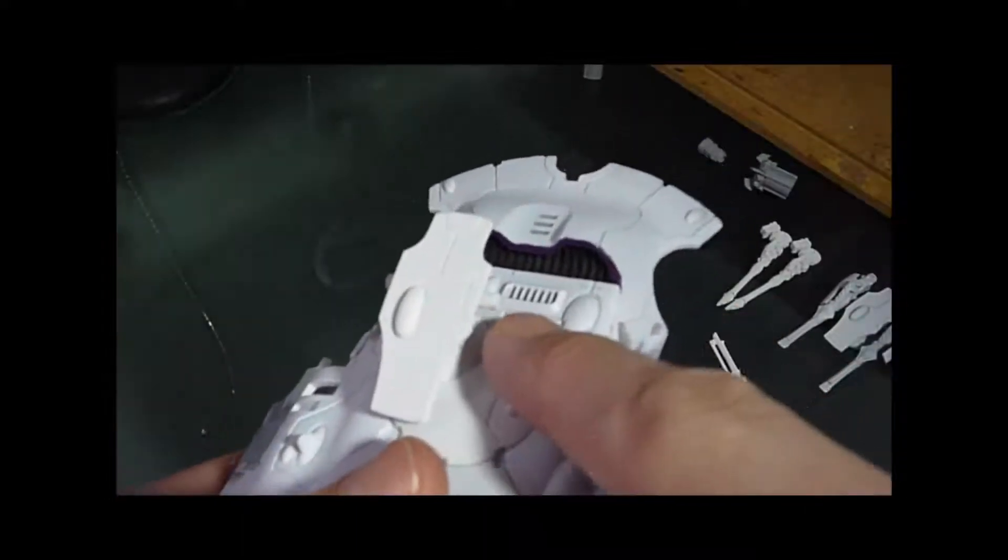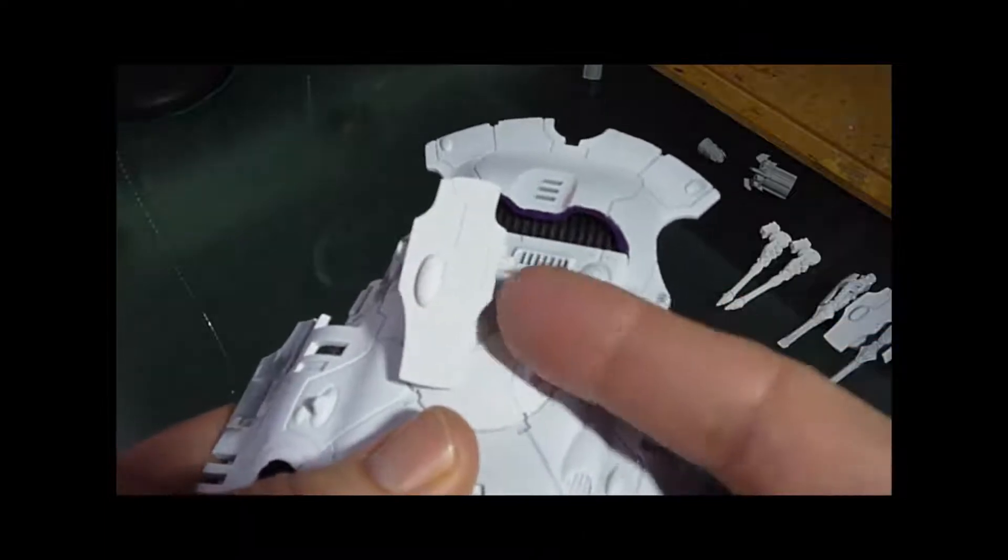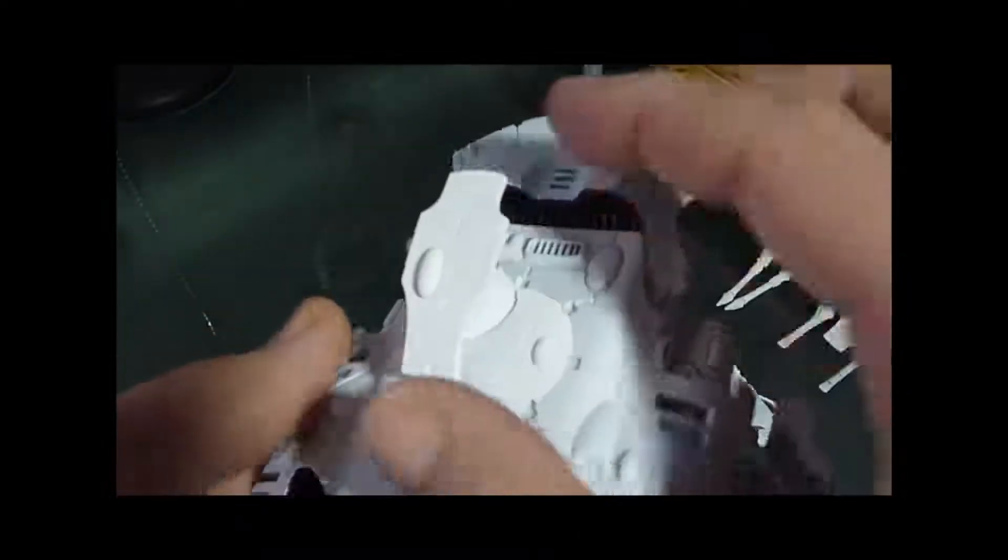Then these two pieces here, they had like little sticky out things where you'd normally just push the gun on. I cut those off and I put two magnets on, one both sides, one each side.